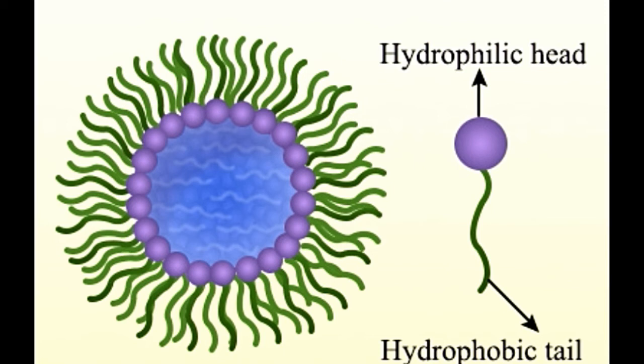Temperature: Micelle formation can take place only above a particular temperature. Kraft temperature is the minimum temperature at which these amphipathic molecules form micelles. Below this temperature, molecules remain in a crystalline form.